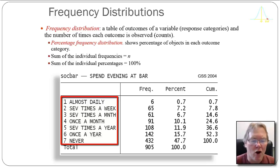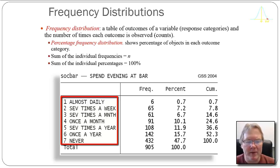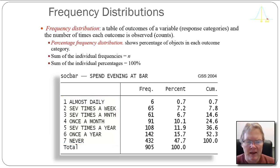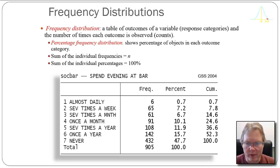You can see that the mnemonic is SOCHBAR, that the values — the possible outcomes — are one through seven, and that the value labels attached to those numbers range from almost daily, several times a week, several times a month, once a month, several times a year, once a year, to never. These data happen to be discrete and orderable, and discrete variables are the easiest to make frequency distributions from.